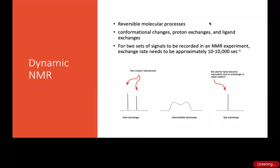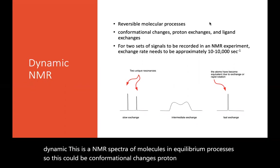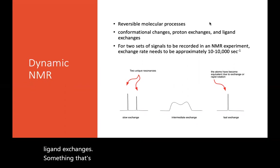Hello. We're going to look at dynamic NMR, and really the NMR isn't dynamic. This is the NMR spectra of molecules in equilibrium processes. So this could be conformational changes, proton transfers, ligand exchanges, something that's happening in the time scale in which the NMR can observe that happening.